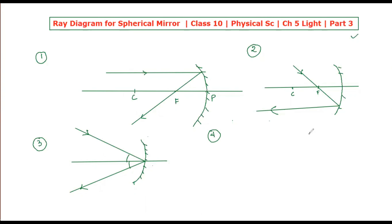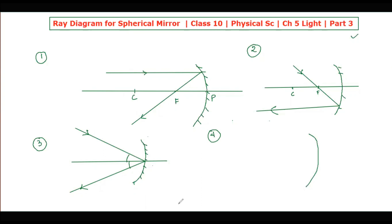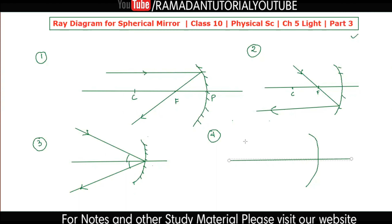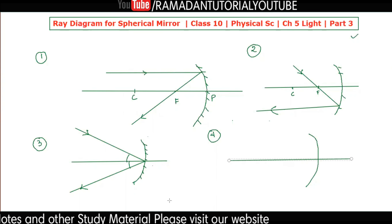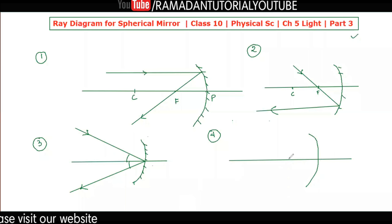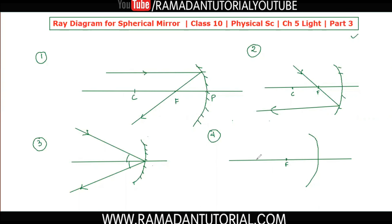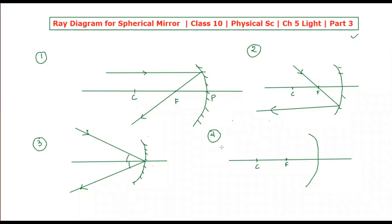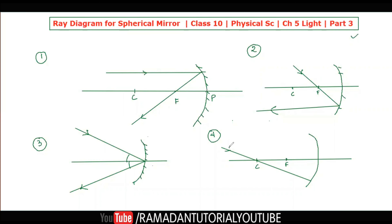Now for the fourth and last ray of light. As you know, this is our focus and this is our center of curvature. The fourth ray of light is the one that passes through the center of curvature. This ray will not be deviated — it will go back the same way it came. Whatever direction it came from, it will return in that same direction.